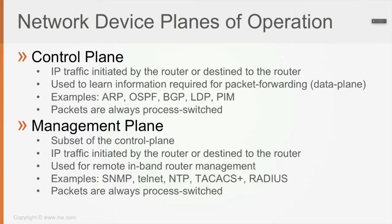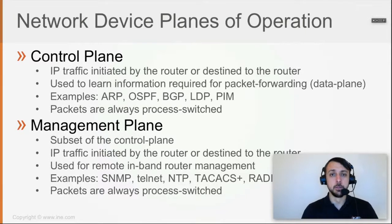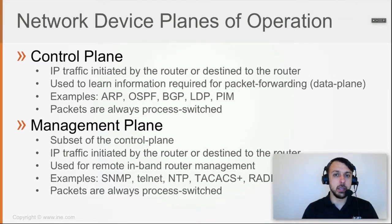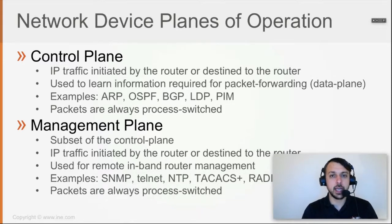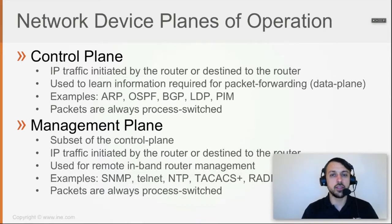The router must intercept the packet, accept it, and open up the payload to determine what it is for. For example, if it's an OSPF packet, the router opens it up and uses it to populate the routing table — that's a control plane packet. For a management plane packet, such as TACACS+, the router receives it, accepts it, opens it up, and uses it to authenticate users or for whatever TACACS+ is being used for.